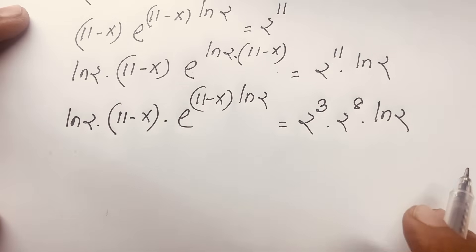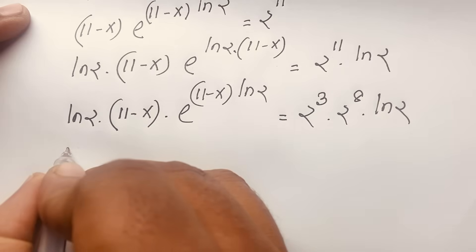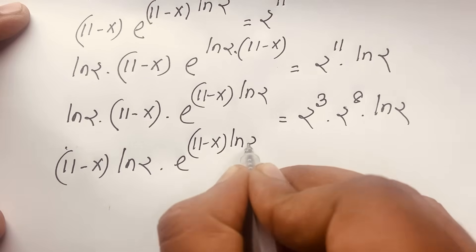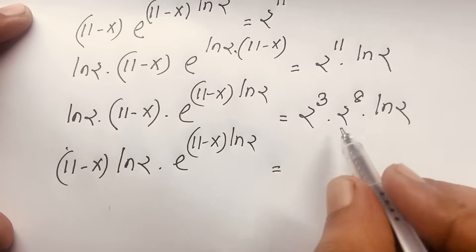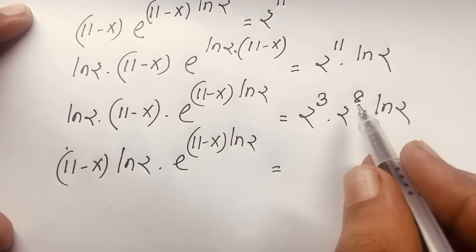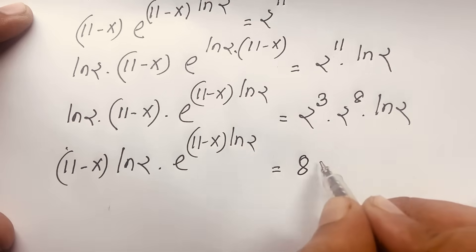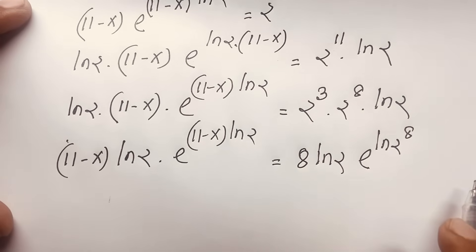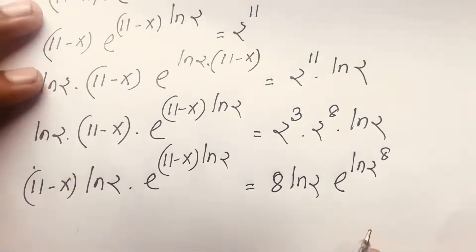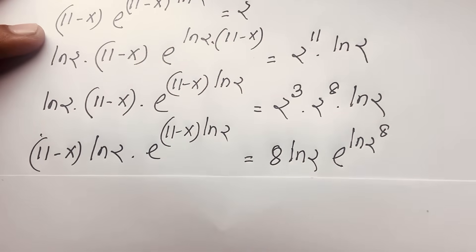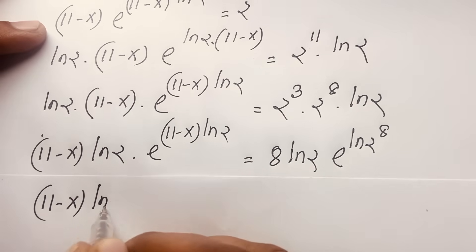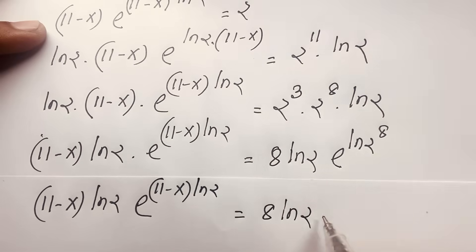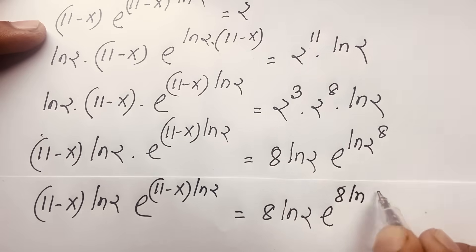We want to use the Lambert W function, so we write the right side as 8 times ln 2 times e to the power 8 times ln 2, since 2 to the power 3 equals 8 and e to the power ln(2 to the power 8) equals 2 to the power 8. This gives us (11 minus x) times ln 2 times e to the power (11 minus x) times ln 2, equal to 8 times ln 2 times e to the power 8 times ln 2.